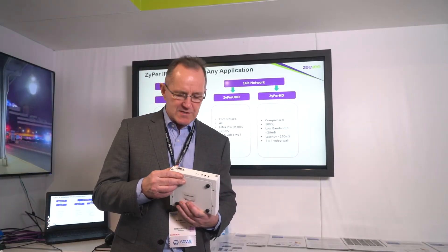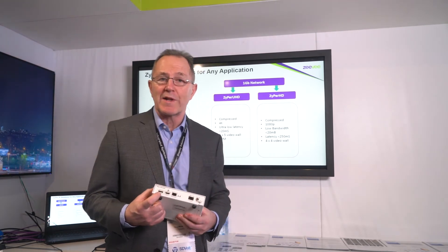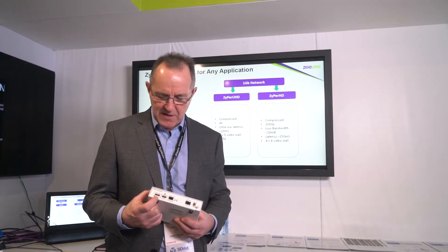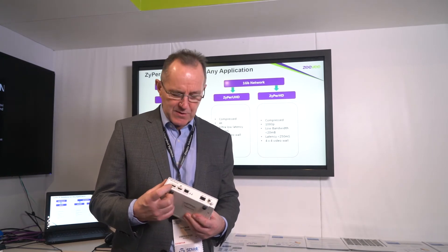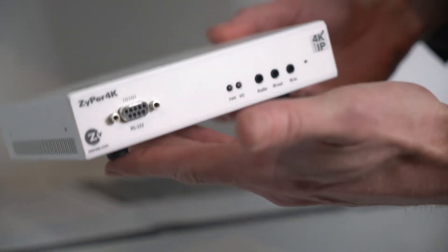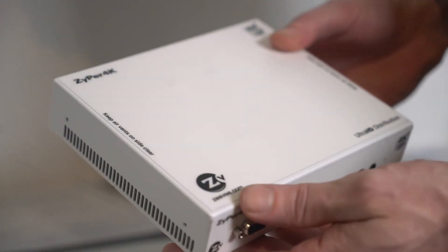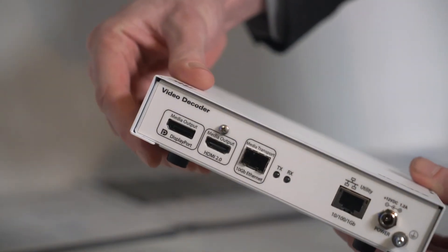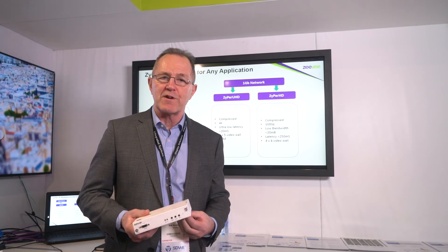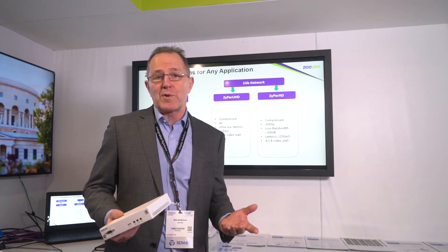This is an example of one of our decoders. This decoder now has DisplayPort out — no other manufacturer is offering that on their decoders — as well as HDMI on that output; you select one of the two. Zyper 4K is available in fiber and copper versions, with dual input devices as well, so we're covering all options for every installation.